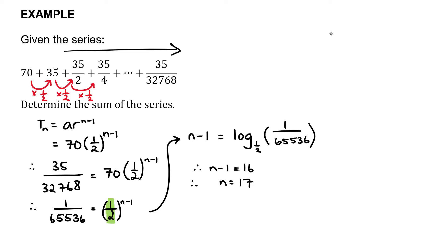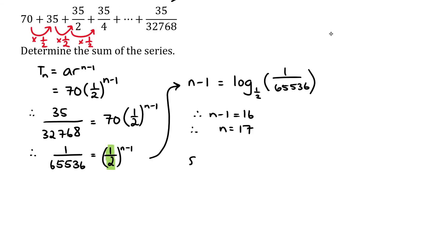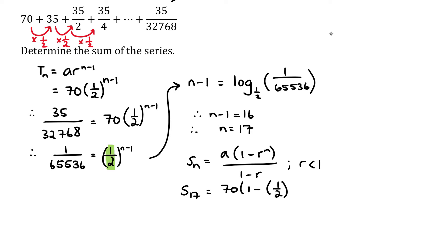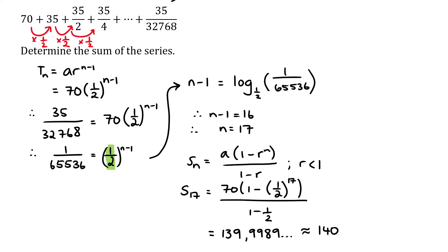Using the geometric sum formula with r less than 1: Sn = a × (1 − r^n) / (1 − r). So S17 = 70 × (1 − (1/2)^17) / (1 − 1/2). Plugging that into the calculator gives approximately 139.9989, which we can round to 140.